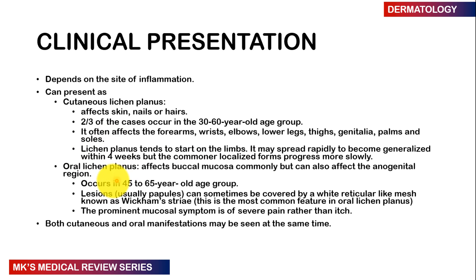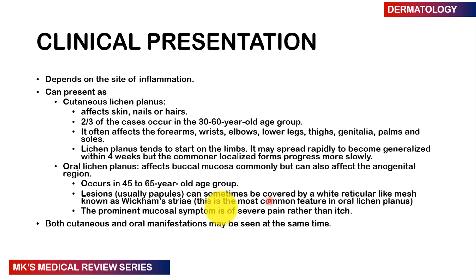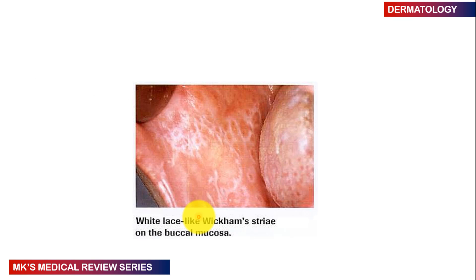Lichen planus may also affect the mucous membranes. Oral lichen planus may affect the buccal mucosa and the anogenital region, occurring in individuals between the ages of 45 to 65 years. It presents with papules that can sometimes be covered by a white lace-like reticular material known as Wickham's striae — the most common feature seen in oral lichen planus. The prominent mucosal symptom is severe pain rather than itch, and both cutaneous and oral manifestations may present at the same time.